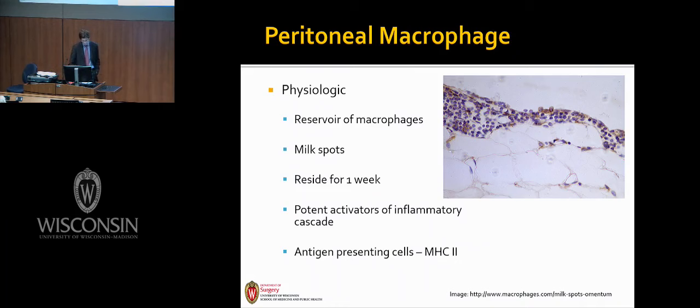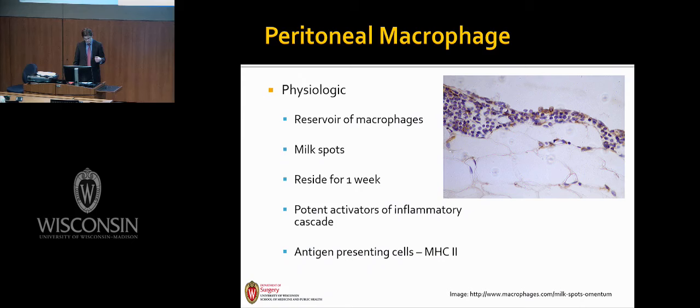The peritoneum acts as one of the largest reservoirs of macrophages in the body. These macrophages are commonly found under normal physiologic conditions attached to the peritoneal surface, accumulating in milk spots along the omentum, the alimentary tract, and along the distribution of mesenteric vasculature. These milk spots are dividing resident macrophages. The peritoneal macrophages live for about one week before either dying or migrating to the liver, the spleen, or the lung, providing standing antimicrobial surveillance and serving as antigen-presenting cells.